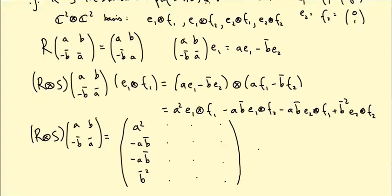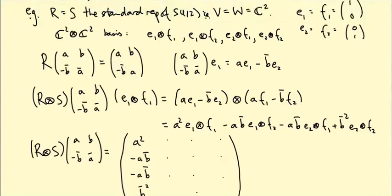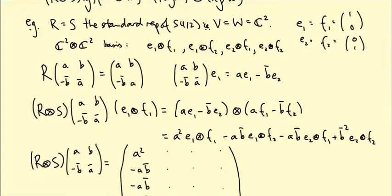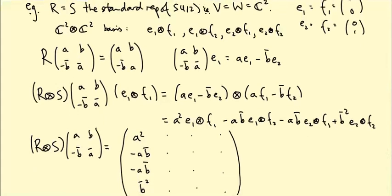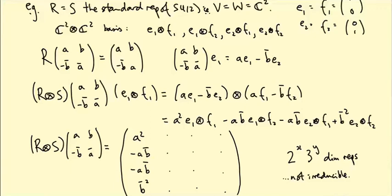It turns out this particular four-dimensional representation is also not irreducible. We've come a long way — starting with a 2-dimensional and a 3-dimensional representation we can tensor any number of them to get representations of dimension 2ⁿ × 3ᵐ — but they're not necessarily irreducible. So we need to work a bit harder, and the thing that will work is taking a sub-representation of the tensor product.